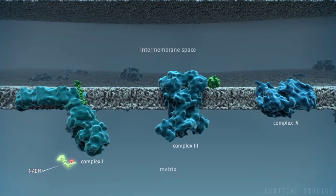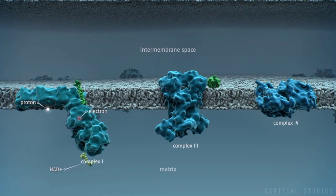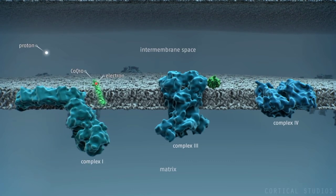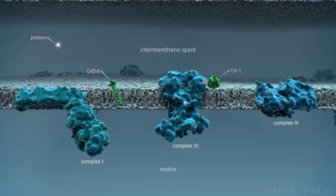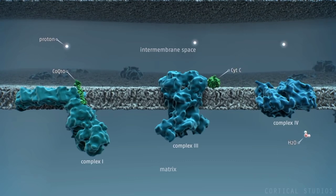Nutrients provide high-energy electrons in the form of NADH, which are used by the protein complexes to pump protons from the matrix to the intermembrane space.